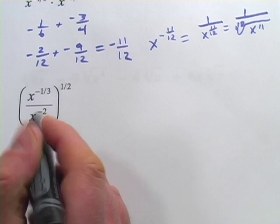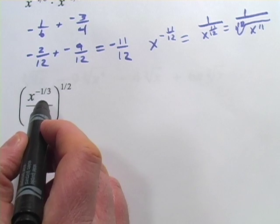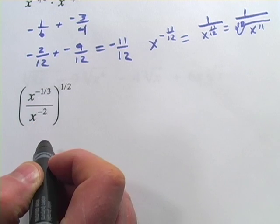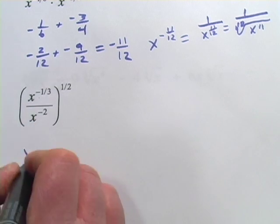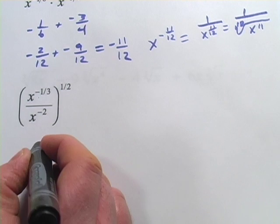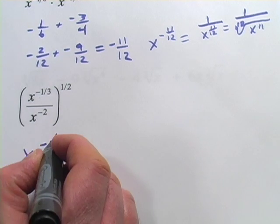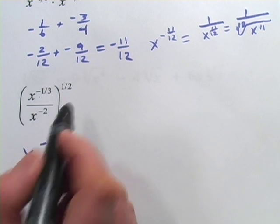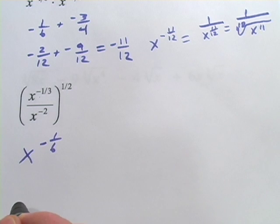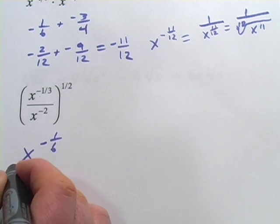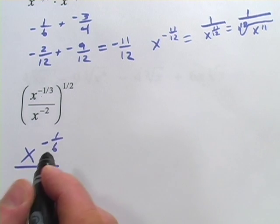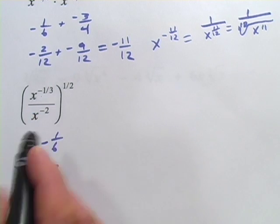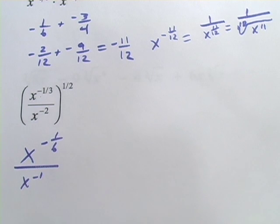Let's do the top first. To get the power right, we have to multiply negative one-third times one-half — that is negative one-sixth. One-third times one-half: multiply the top, multiply the bottom, you get negative one-sixth. Now for the bottom of the fraction: one-half times negative two is negative one.